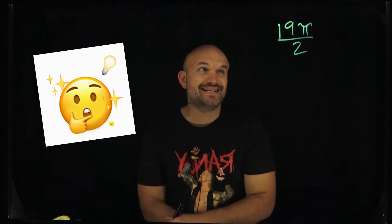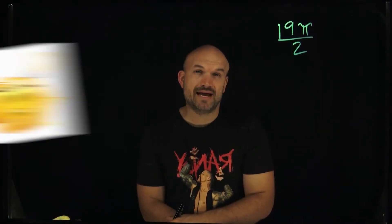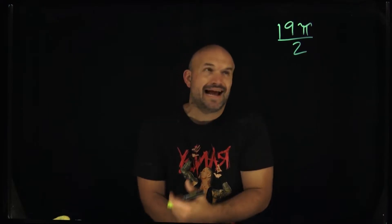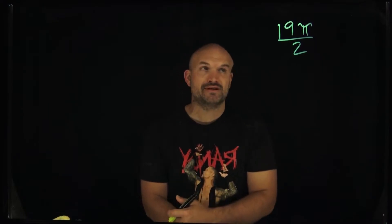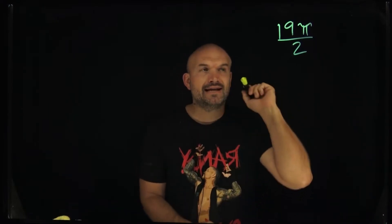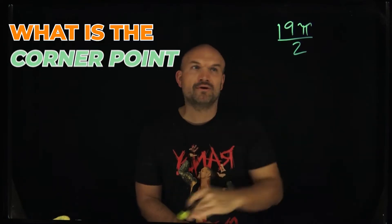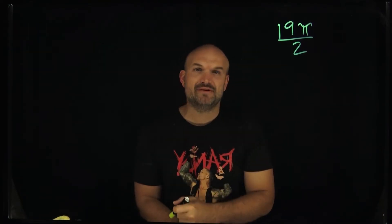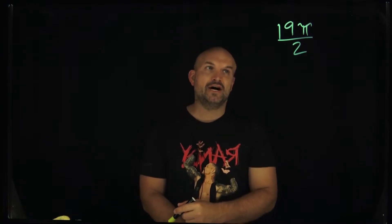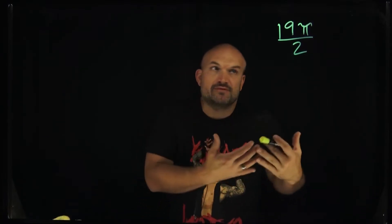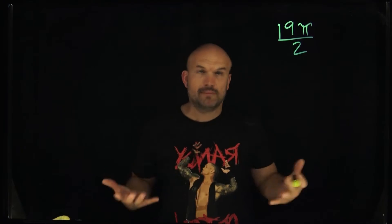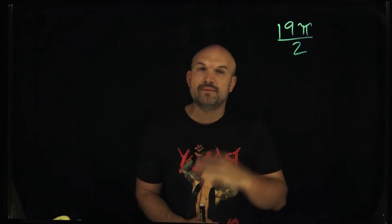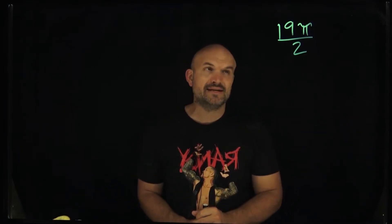What do we do when we have a problem like 19π/2 and we need to evaluate the six trigonometric functions? The first thing we need to understand is what is the coordinate point that lies on the unit circle for the angle 19π/2 — what it equals in radians, how we graph it in standard form, and what point it corresponds to.